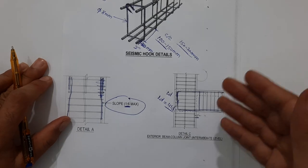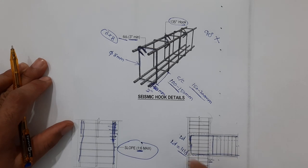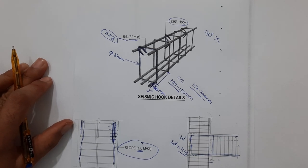This is a very important topic to know about hooks details, lapping joint, and beam-column joint at intermediate level. Hope this video can help you. Thanks for watching, see you in the next video. Goodbye.